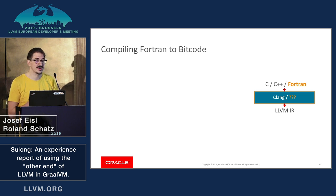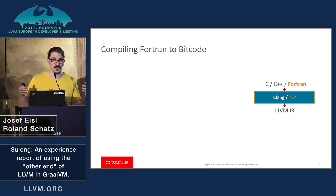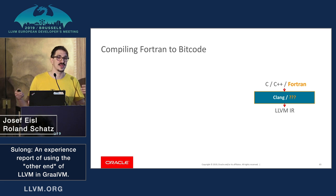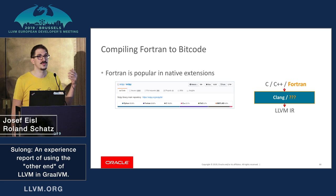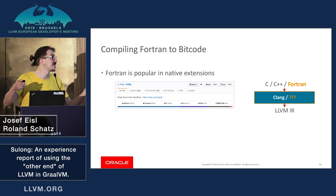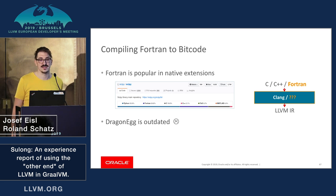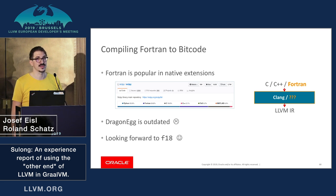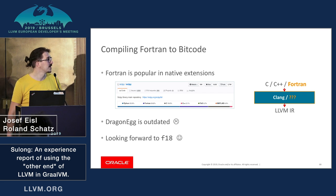I've only talked about Clang and C languages, but of course the whole problem also applies to Fortran. A lot of Fortran code is used in native extensions and we need to support it. DragonEgg is out of date and we are really looking forward to F18 — there were great discussions today about that.